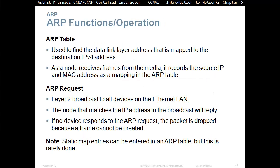ARP functions and operations — the ARP table. It's used to find the data link layer address mapped to the destination IPv4 address. As a node receives a frame from the media it records the source IP address and MAC address as a mapping in the ARP table. ARP requests are Layer 2 broadcasts to all devices on the Ethernet LAN; the node that matches the IP address in the broadcast will reply. If no device responds to the ARP request, the packet is dropped because a frame cannot be created. Note that static mappings can be entered in the ARP table, but this is rarely done.